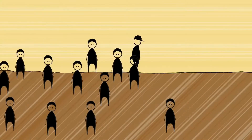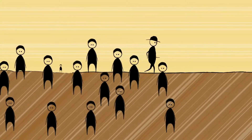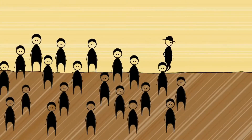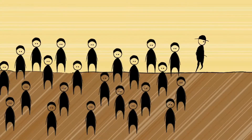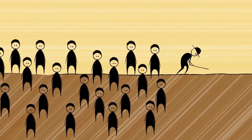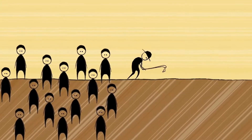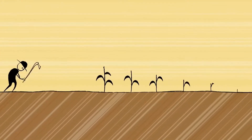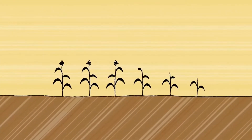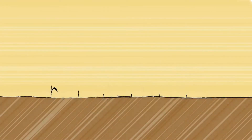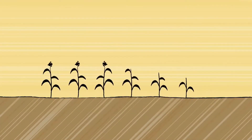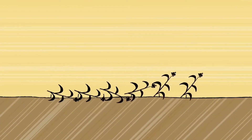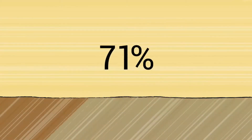Furthermore, the Sahel has one of the highest birth rates in the world. The rapid population growth puts more strain on food production and leads to increasingly aggressive means of harvesting, contributing to loss of soil fertility. Around 80 percent of farmlands suffer from degradation.